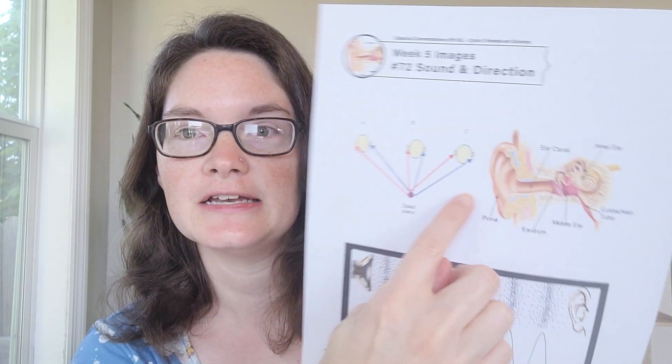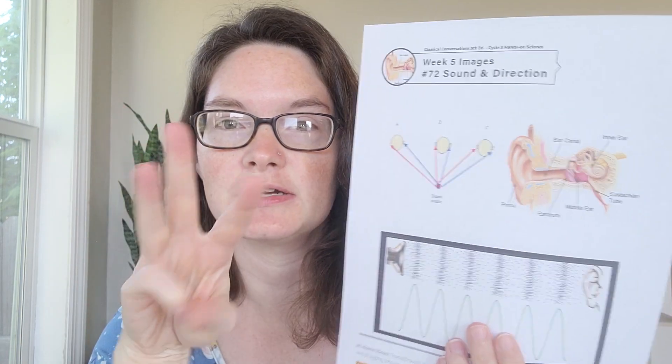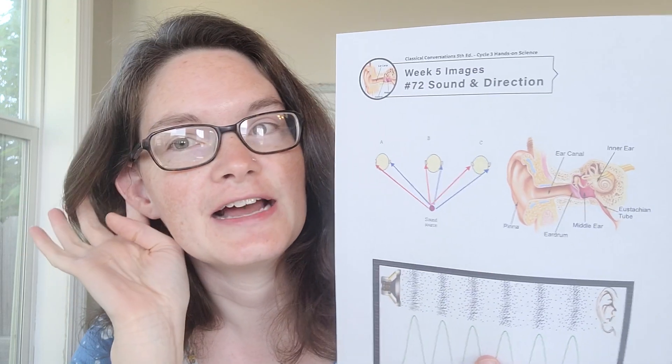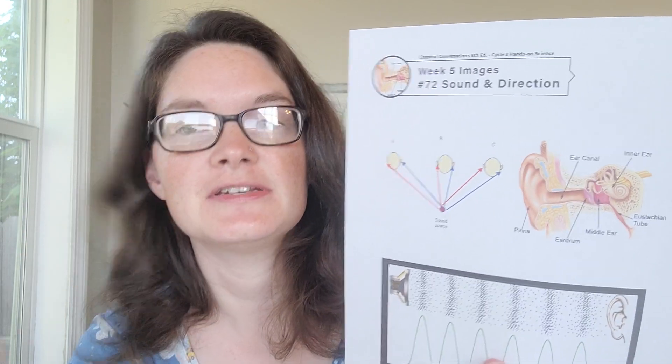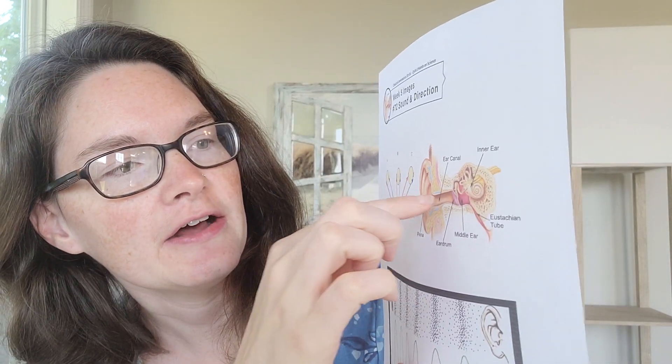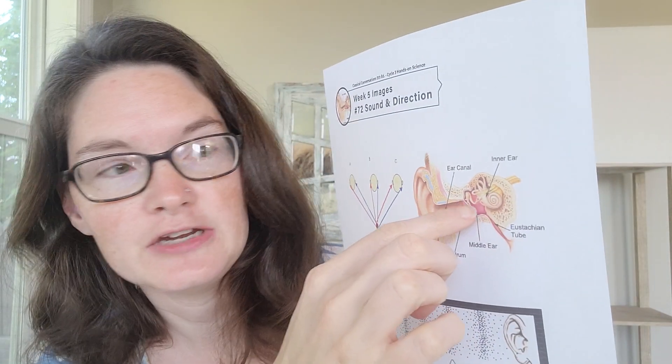Those molecules move that vibration all around, and some of that goes into our ear. You can talk about the parts of the ear now or after the experiment. Nicole does have a diagram of the ear. Our ear has three parts: we have the outer ear, which collects the sound. God made our ears that shape to kind of direct the sound in. Then we have the middle ear and our ear canal.